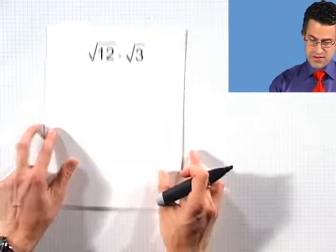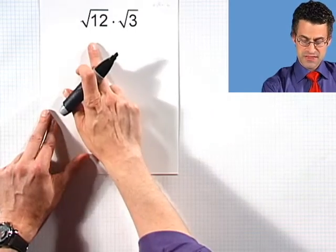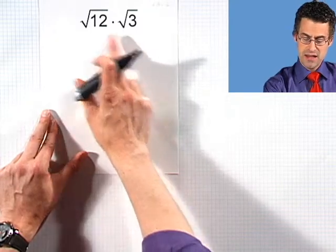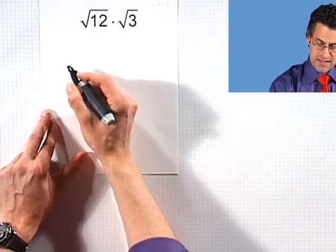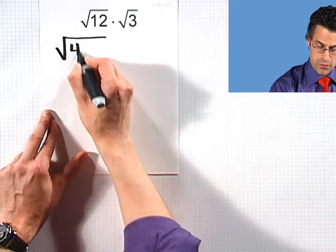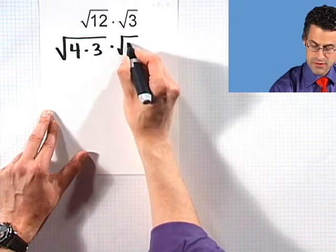Let me show you that we can now use these properties to actually simplify all sorts of things. Looking at the square root of 12 times the square root of 3 looks sort of complicated, but 12 I can write as what? I can write the 12 as 4 times 3. And then I've got this times square root of 3.